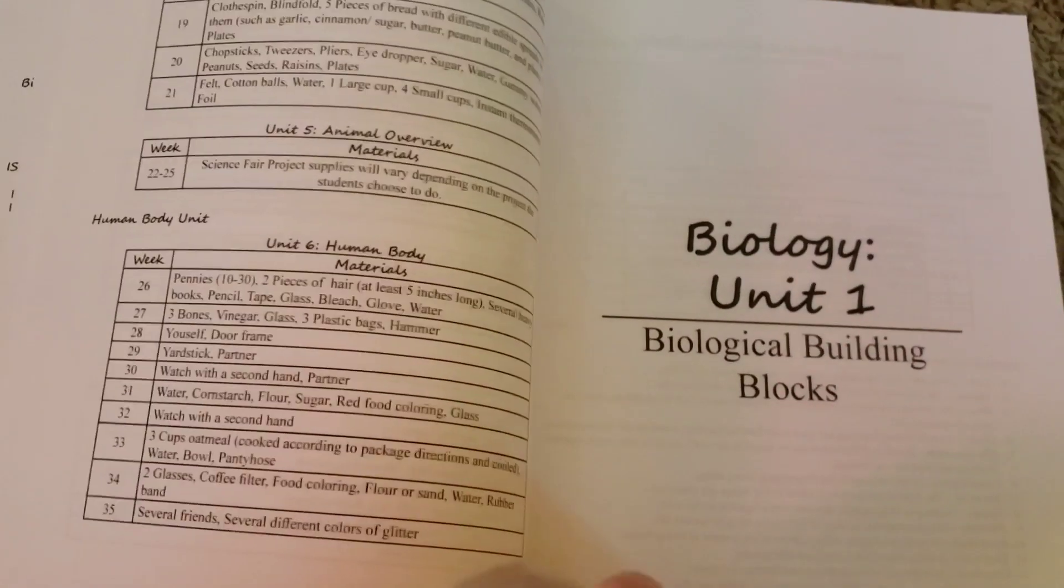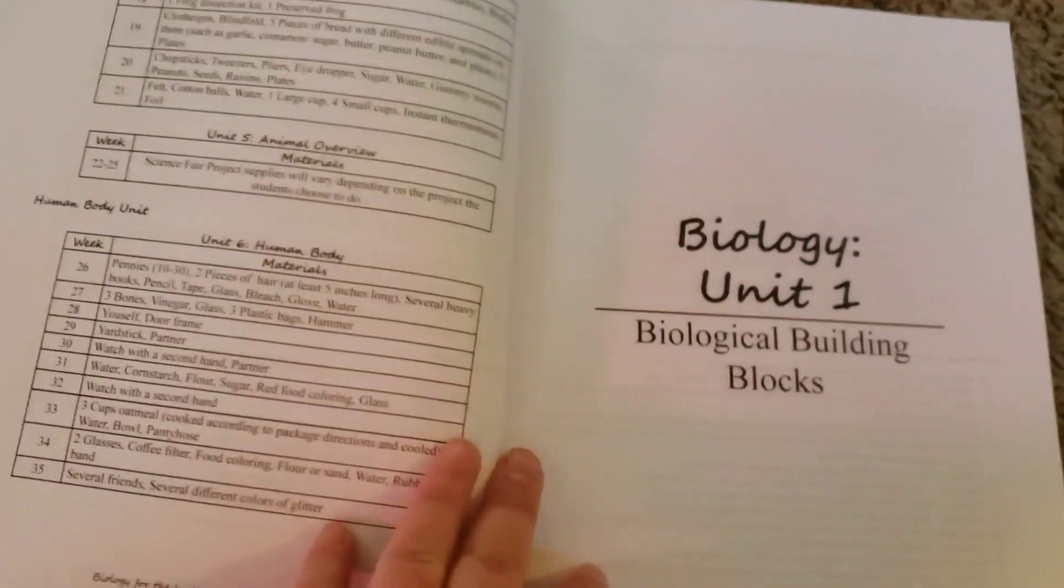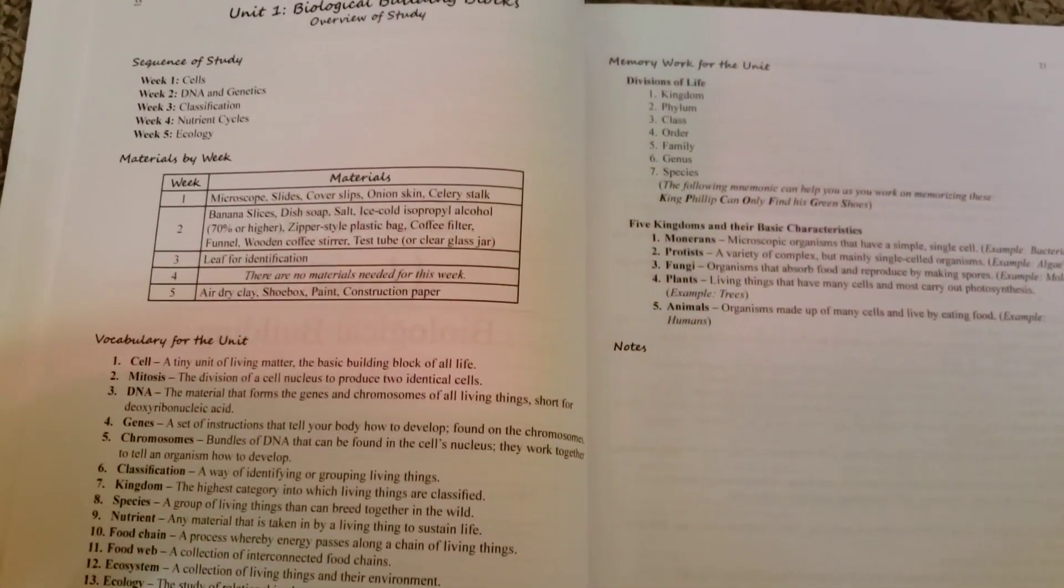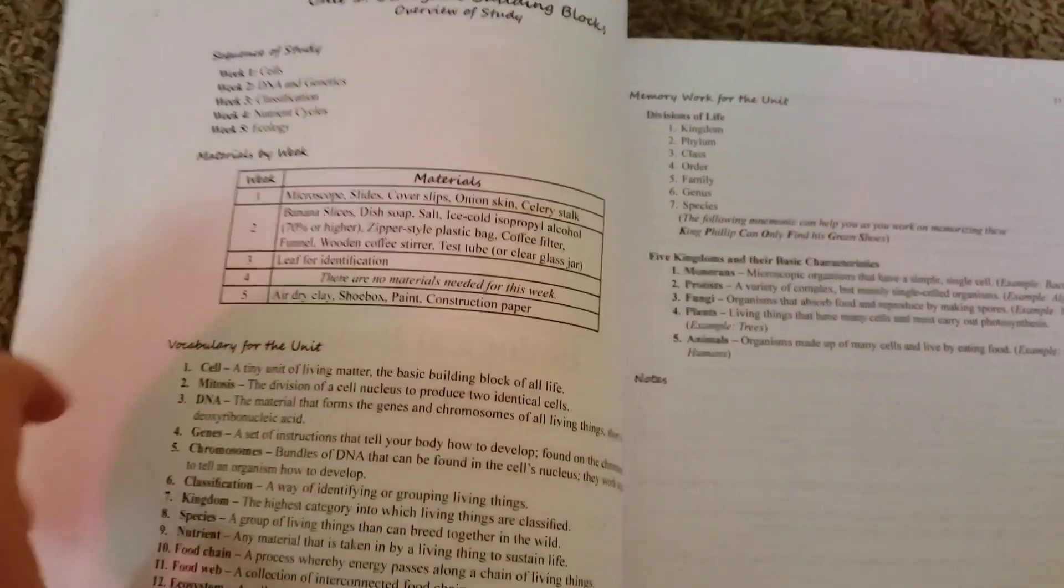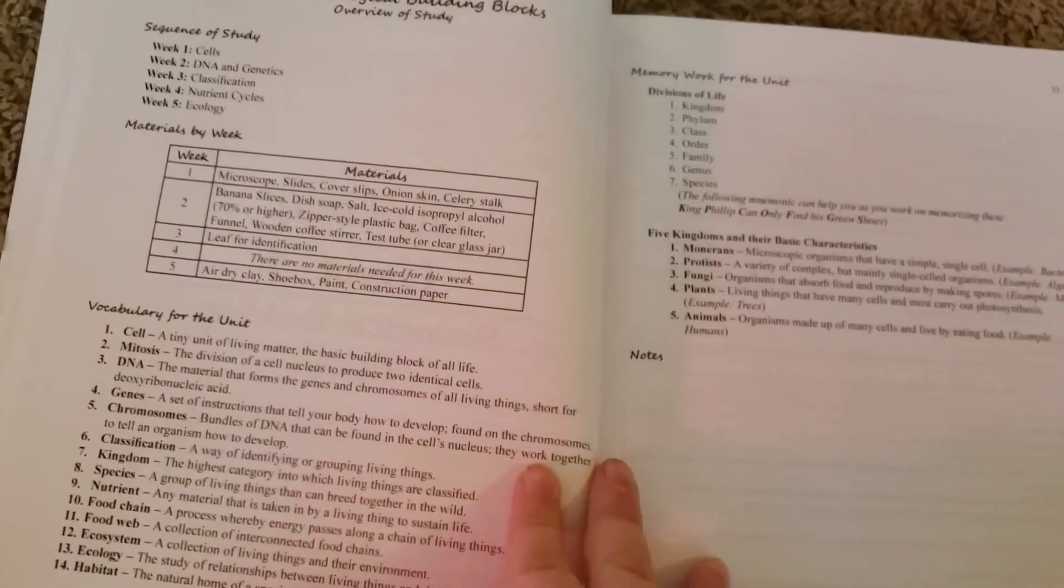You can go to the website Home Science Tools, and that's where I'm going to get a lot of these, because for one of the units you actually need a frog dissection kit and a frog to dissect, so Home Science Tools has that for a really good price. So I'm going to purchase that from there when it gets closer to the time.